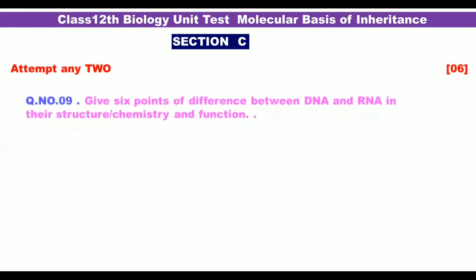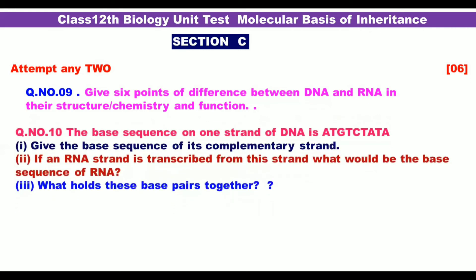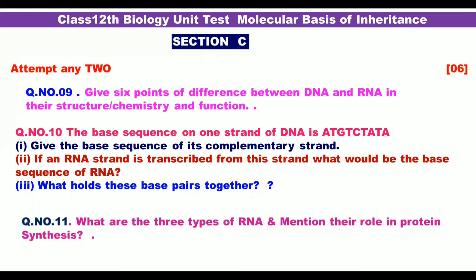Section C — attempt any 2; these are 6-point questions. Question 9: Do six points of difference between DNA and RNA in their structure, chemistry, and functions. Question 10: The base sequence on one strand of DNA is given — write the complementary strand. If an RNA strand is transcribed from this strand, what would be the base sequence of the RNA? Question 11: What are the three types of RNA? Mention their role in protein synthesis.